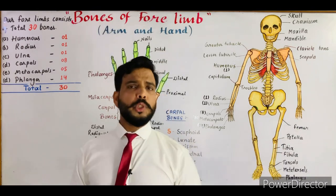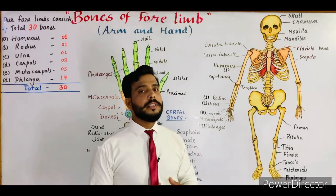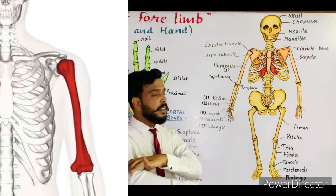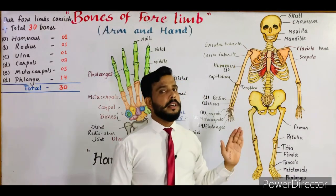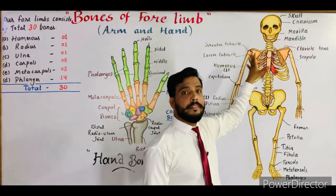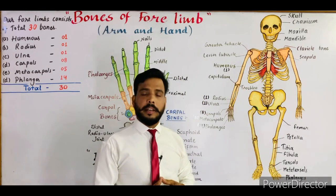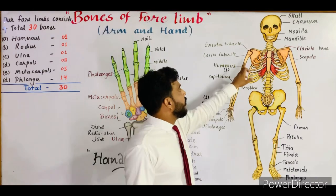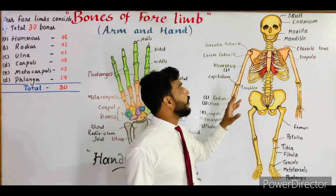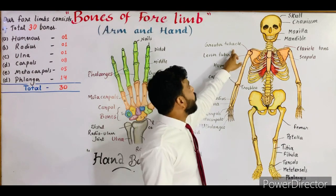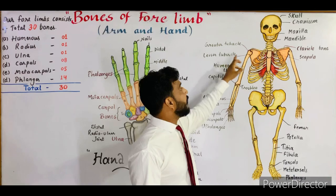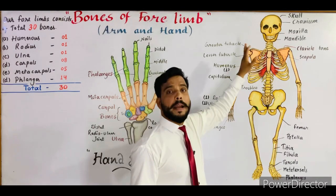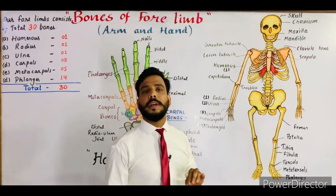Now I will tell you in detail about these bones. First, the humerus — it is the largest and longest bone of our forelimb, forming the upper arm. The humerus is attached to the pectoral girdle inside a cavity known as the glenoid cavity, which I have covered in my previous videos. The humerus bone has two outgrowths at its proximal end: one is known as the greater tubercle and the other as the lesser tubercle. The lesser tubercle fits inside the scapula bone of the pectoral girdle at the glenoid cavity.